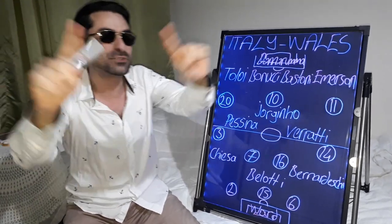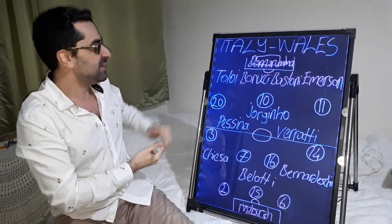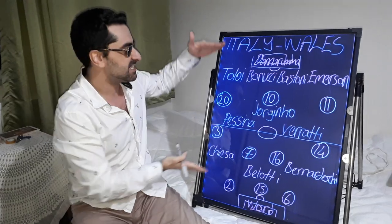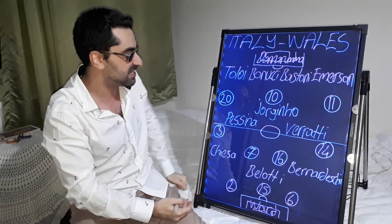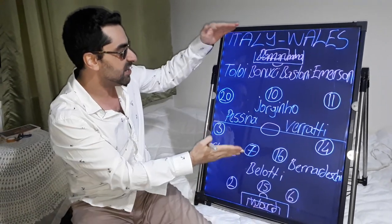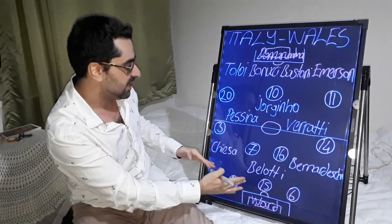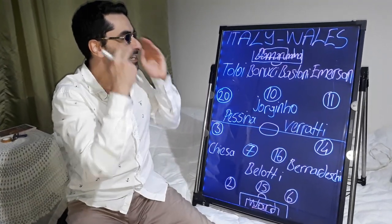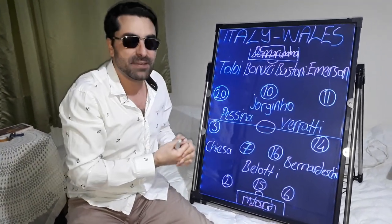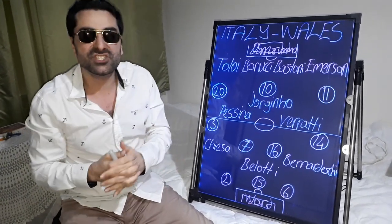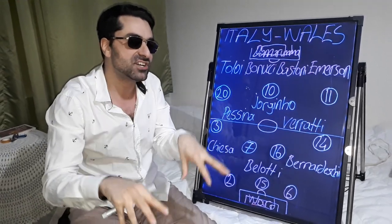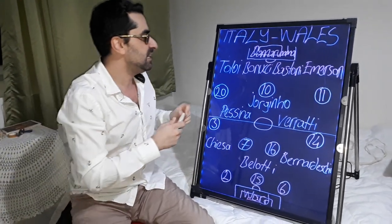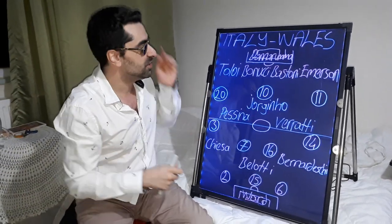Let's start with the tactics of this game. Italy played in Roberto Mancini's classical 4-3-3 formation, and Wales played in a 3-4-3 formation. Mancini switched so many players and made a big rotation in this game.